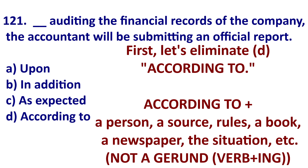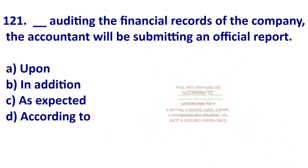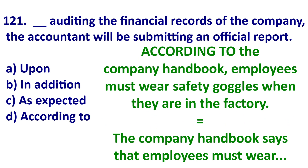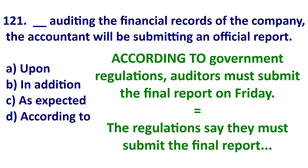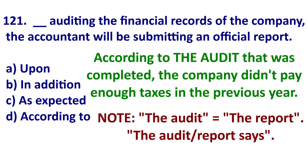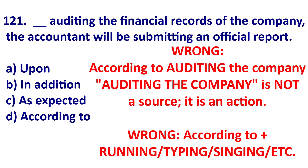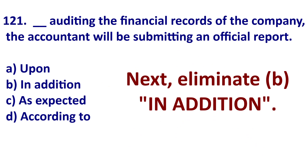Let's start eliminating. First, get rid of D — 'according to.' When we use 'according to,' it's followed by a person, a source, or rules — not a gerund or action. For example: according to the company handbook, employees must wear safety glasses in the factory. Or: according to government regulations, auditors must submit the final report on Friday. Or: according to the audit — not 'auditing' — the company did not pay enough taxes. 'According to auditing the company' is wrong because 'auditing' is a gerund phrase, not a source.